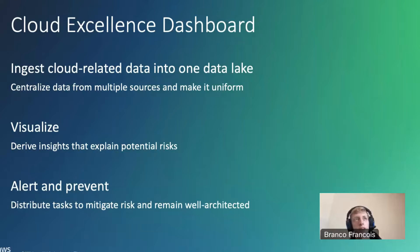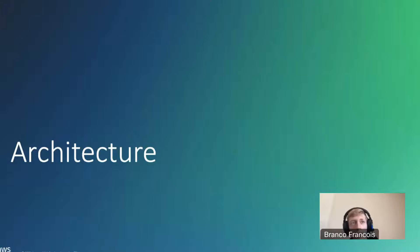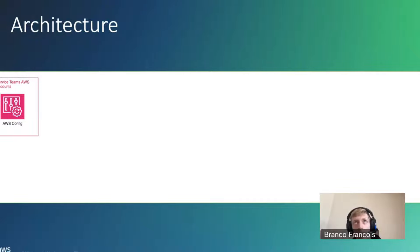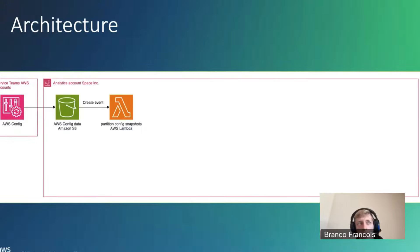To understand how we can accomplish this, we should take a look at the architecture. The main building block for this dashboard is AWS Config, a service that allows you to create rules to check compliance. AWS Config is configured in every AWS account that Space Inc. has across their whole cloud infrastructure — every service team has AWS Config. And in AWS Config, we have the option to write a lot of data to S3. We will gather all the exported data from Config in one central analytics account.